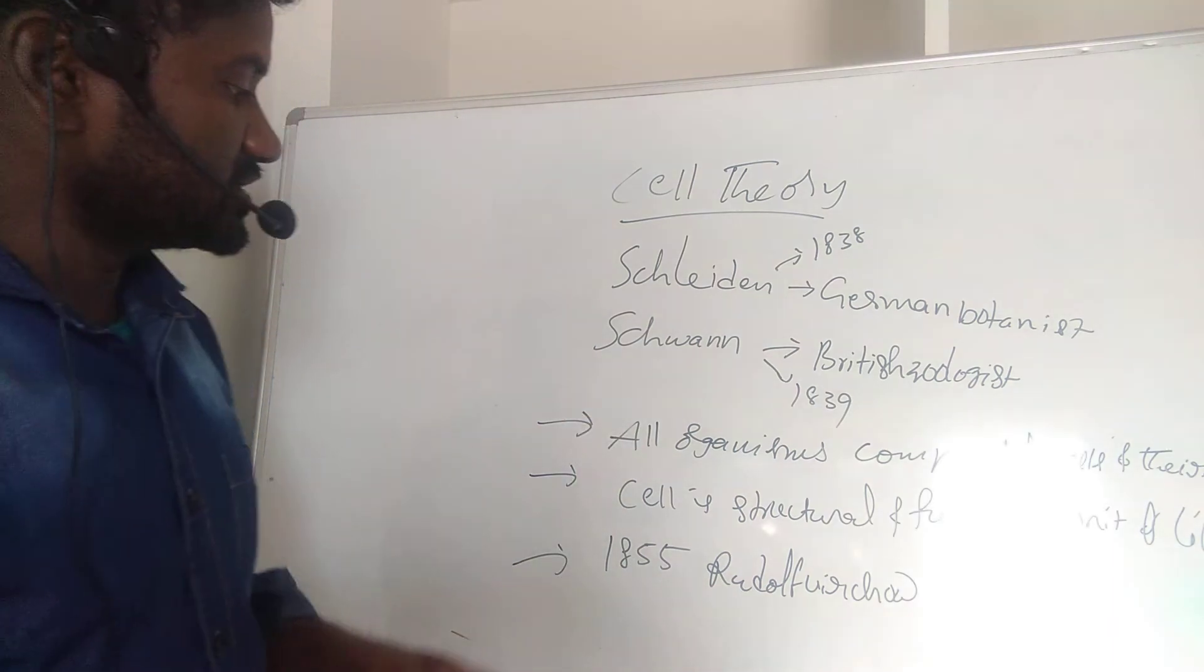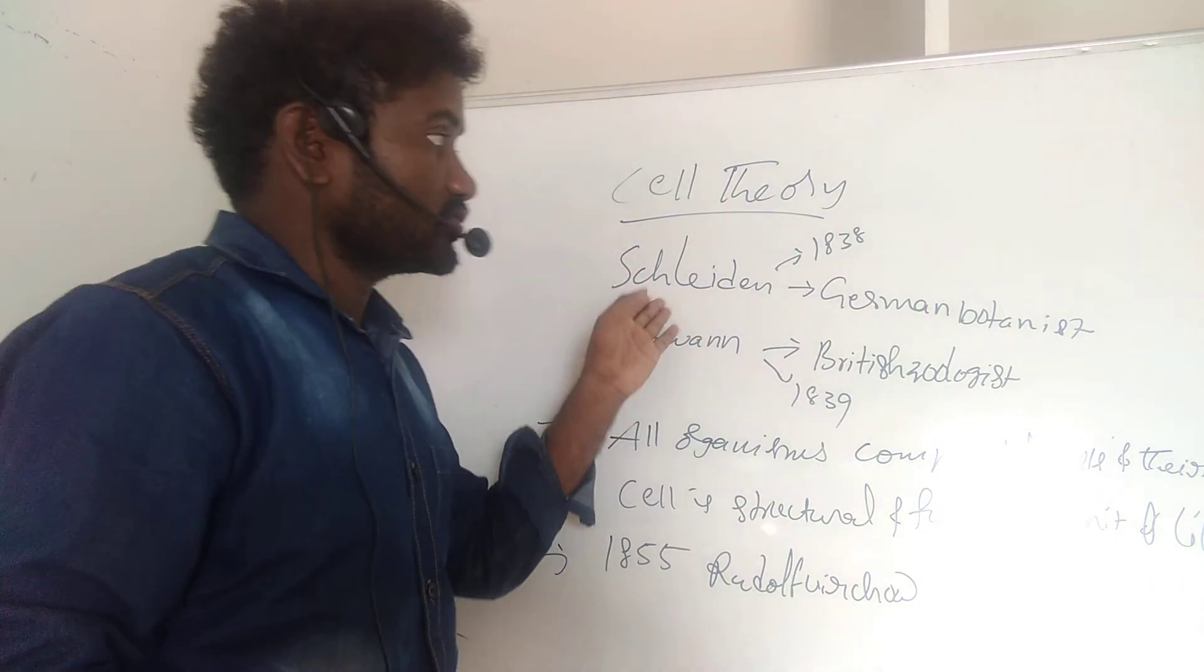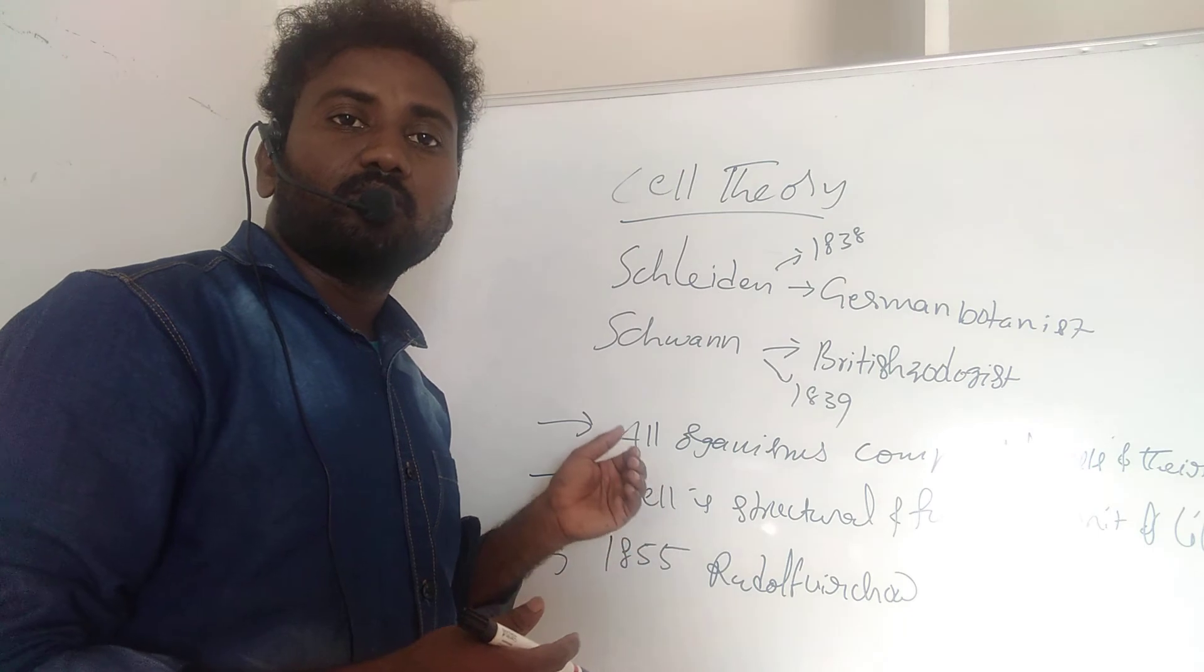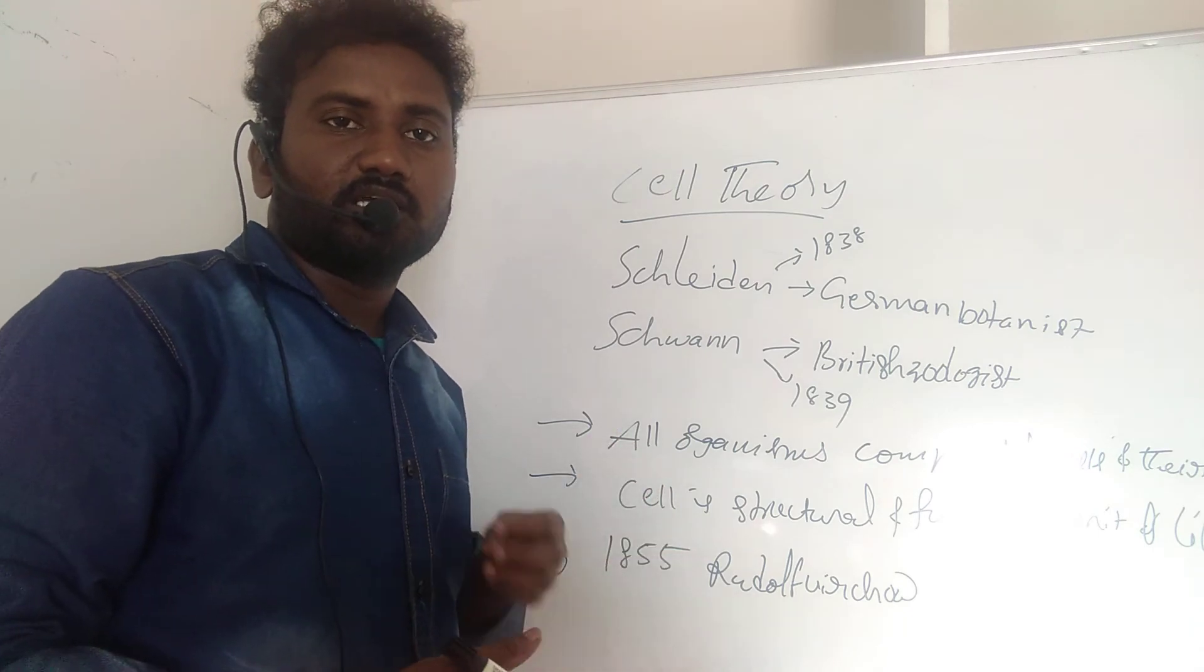This statement was added to the cell theory proposed by Schleiden and Schwann, and the modified version is called modern cell theory or cell lineage theory.